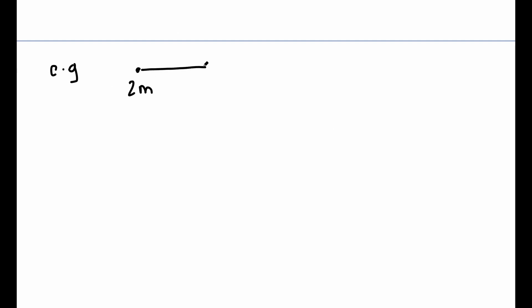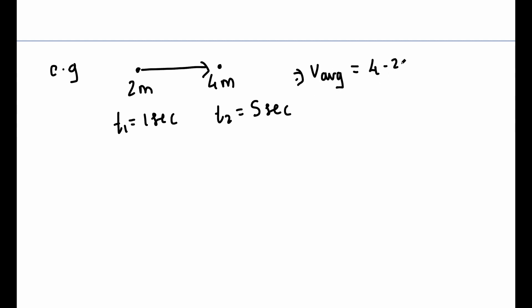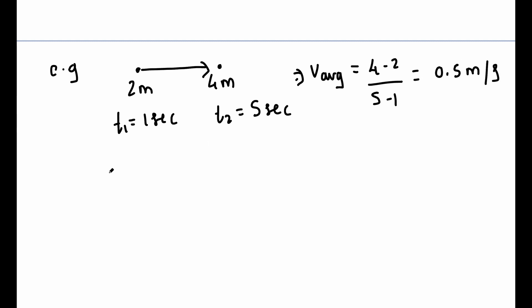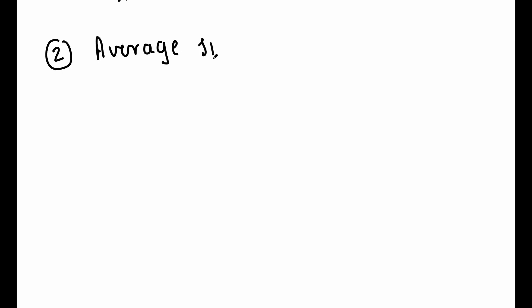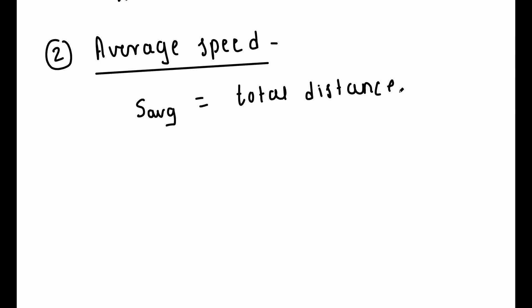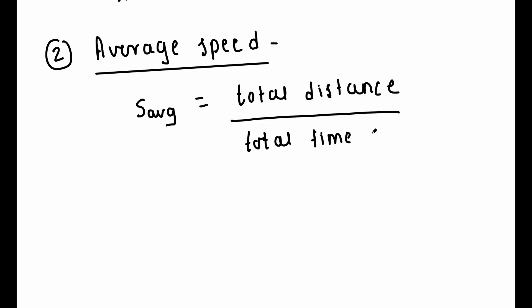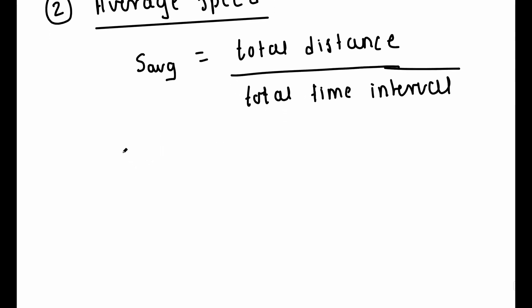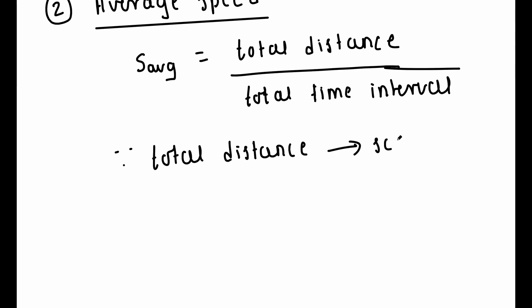For example, if a particle moves from x = 1 meter to x = 4 meters, for t1 = 1 and t2 = 5 seconds, then V_average = (4 - 1) / (5 - 1) = 0.75 meters per second. Average speed is a different way to describe how fast an object has moved. Average speed is defined as the total distance traveled divided by the time taken to travel that distance. Since total distance is a scalar, as it doesn't describe direction of motion, S_average is also a scalar.